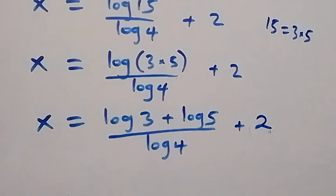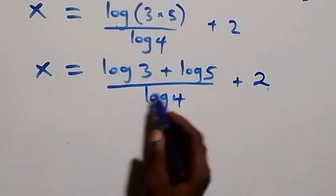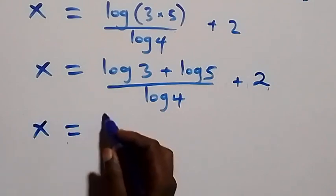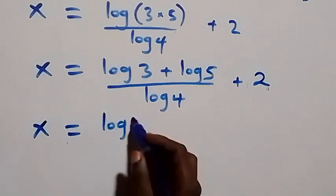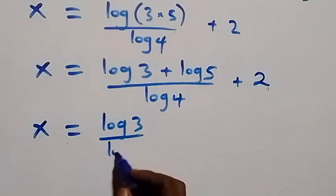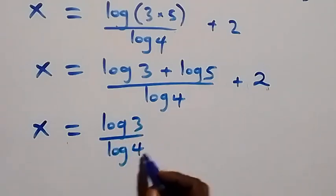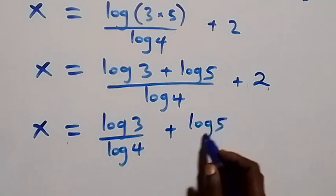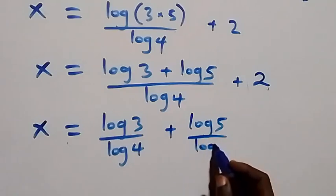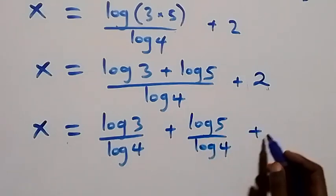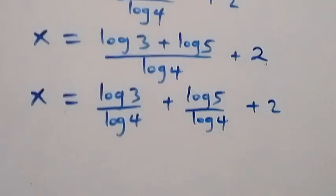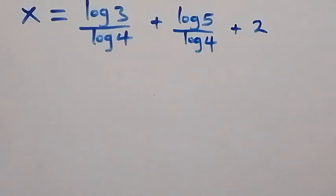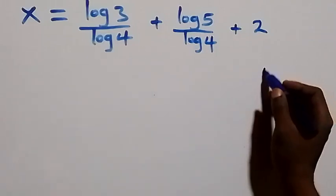From here what we have, we can separate this into two fractions, and this becomes x equals to log 3 over log 4, plus log 5 over log 4, plus 2.